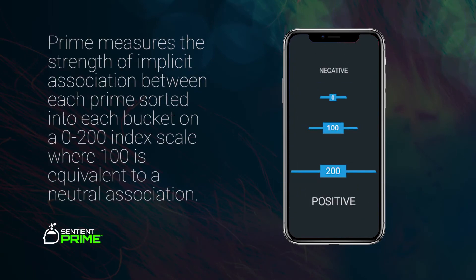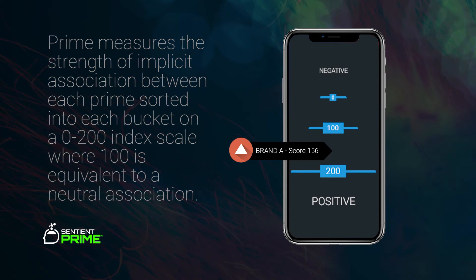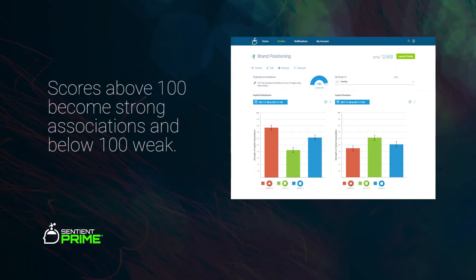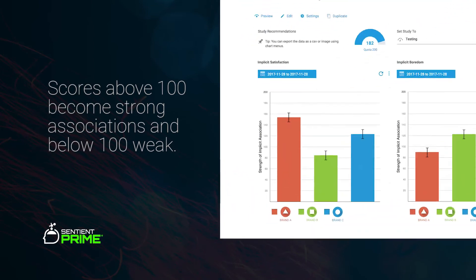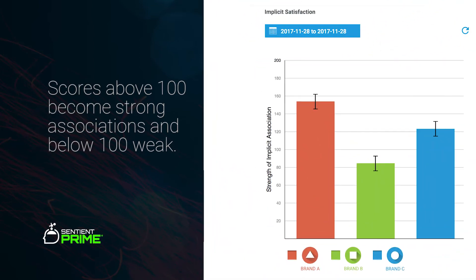The result of the test is a strength of implicit association between each prime and the bottom bucket on a 0 to 200 index scale, where 100 is equal to a neutral association. As scores go above 100, they become strong associations, and as they go below 100, they become weak.